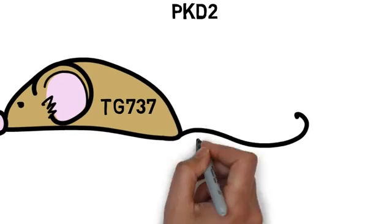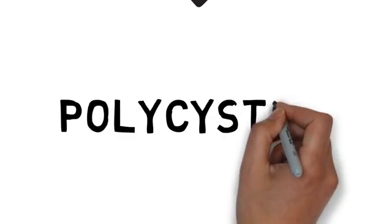Subsequently, the proteins encoded by PKD1 and 2, namely polycystin 1 and 2, were found to co-localize in the renal cilia.